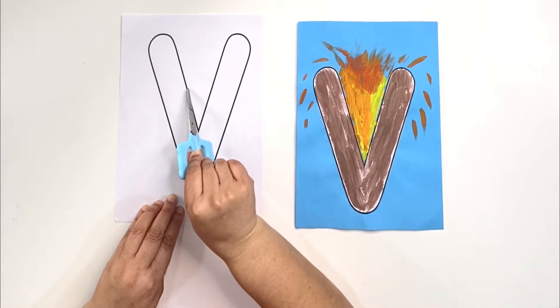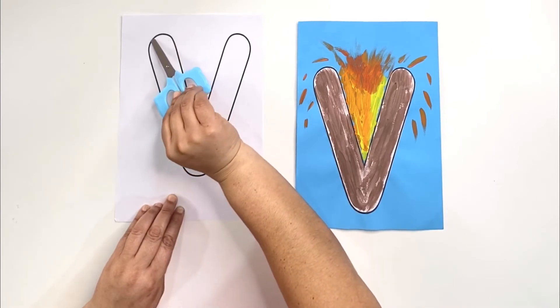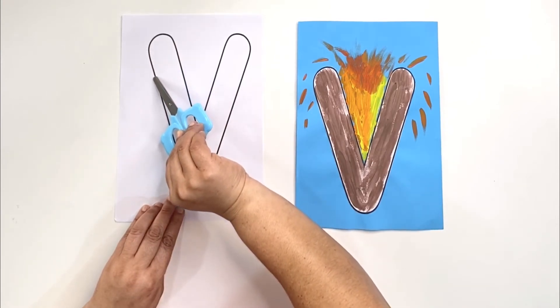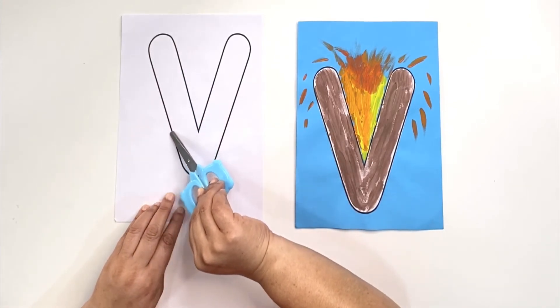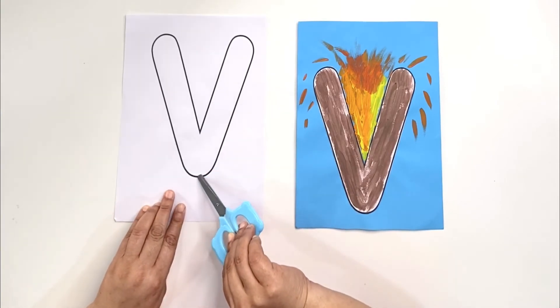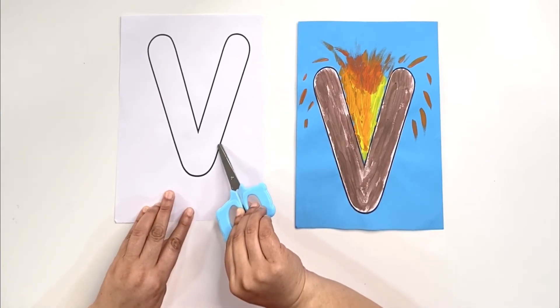But remember, your eyes have to follow the scissors so that you can stay on the black line, right? This is super fun and I know you can do this.